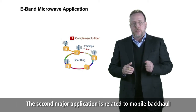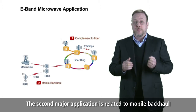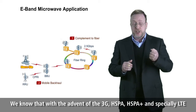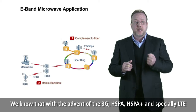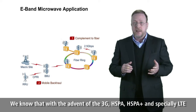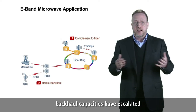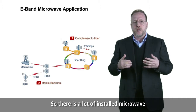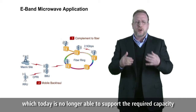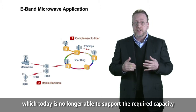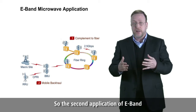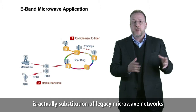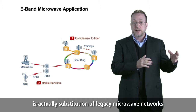The second major application is related to mobile backhaul. With the advent of 3G, HSPA+, and especially LTE, backhaul capacities have escalated. There is a lot of installed microwave which today is no longer able to support the required capacity. So the second application of eBand is actually substitution of legacy microwave networks.